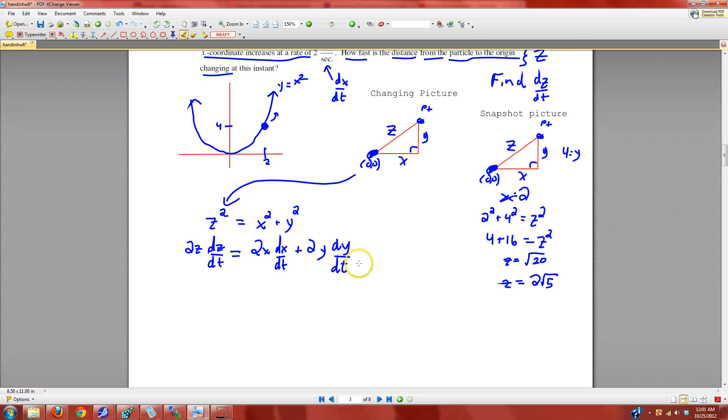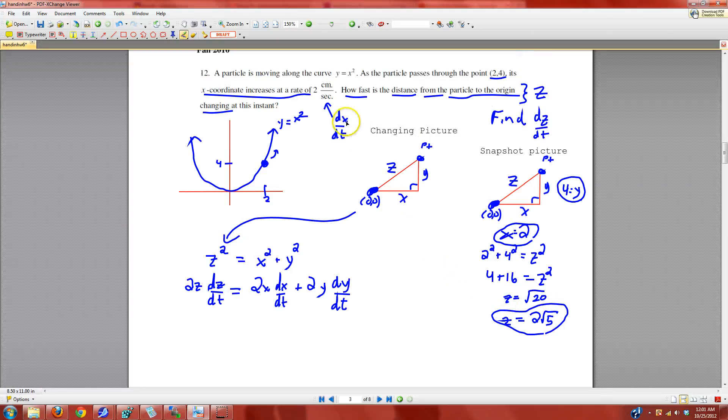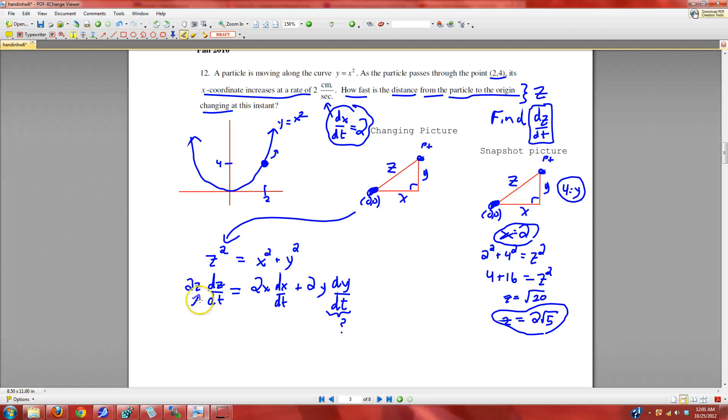Plus 2y dy dt. We know all the players: x is 2, y is 4, z is 2 root 5, dx dt is 2. They want us to find dz dt, so the only mystery is what dy dt is. We have all the other players. We know that z is 2 root 5, this is what they're asking us to find, dz dt. We know that x is 2, we know that y is 4, we're going to need to know what dy dt is so that we can end up getting dz dt.